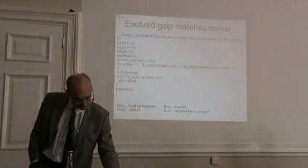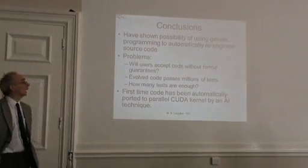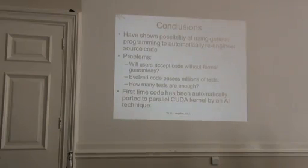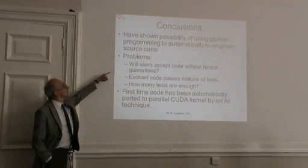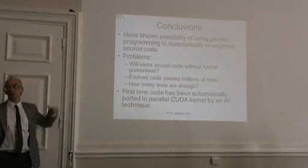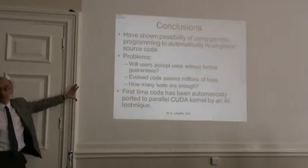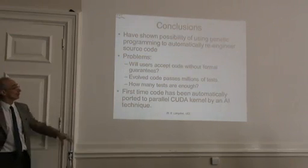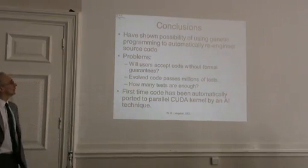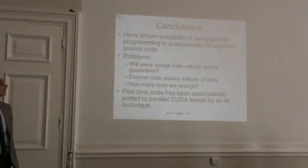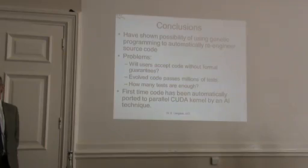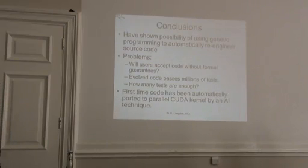That code has been automatically generated by GP in response to the fitness function that says: do the same thing as gzip does. It's been through literally millions of tests and always returns the same answer as gzip, and by inspection you can see that it is actually the same. But there's no formal proof that it does the same as gzip. From a pragmatic point of view we can look at the code and we've tested it literally millions of times — but there's still potentially a problem if somebody asks how you can prove the code is functionally correct, and the answer is we don't.